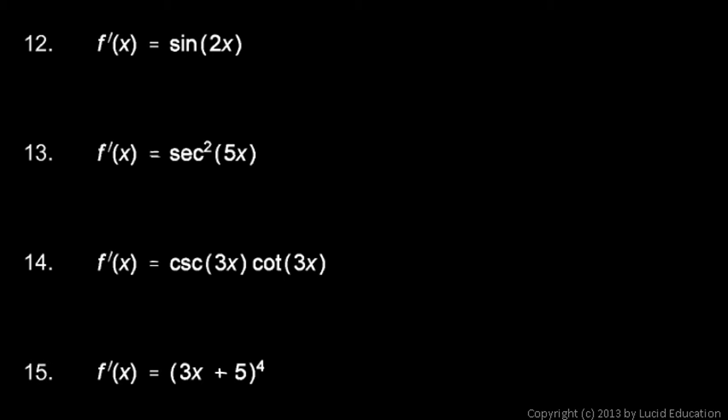f prime is sine of 2x, and we need to find f. So, what function has sine of 2x as its derivative? Well, the negative cosine function has the sine function as its derivative, so let's try negative cosine of 2x. And we see that if we take the derivative of this, we would get sine of 2x times 2 by the chain rule.